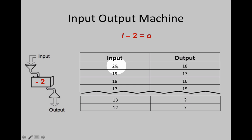If two is taken away from 20, the output is 18. If the input i is 19, take away two gives you an output of 17. What are the missing numbers? If two is taken away from 13, the output must be 11. If two is taken away from 12, what must the output be? 10.